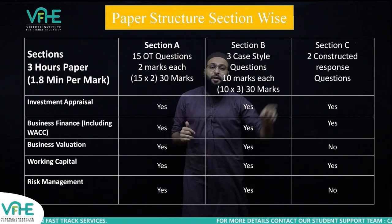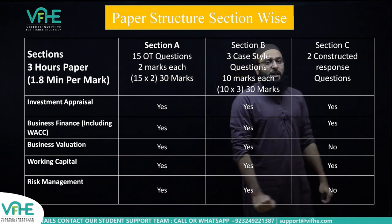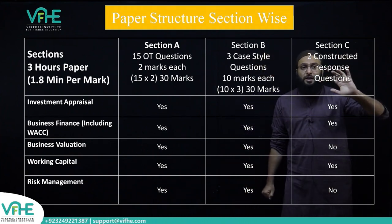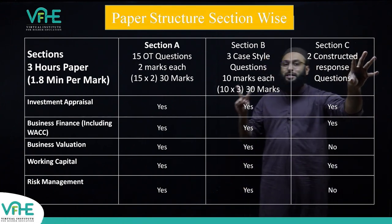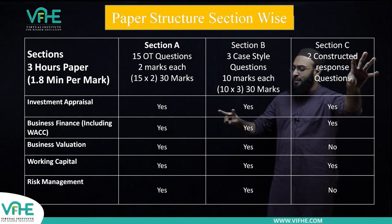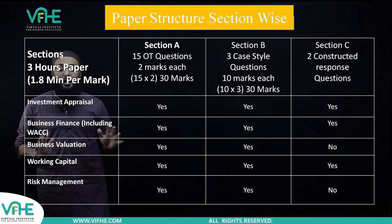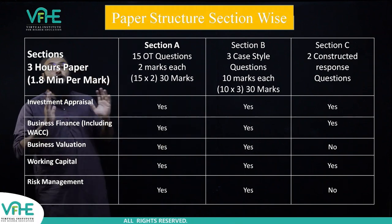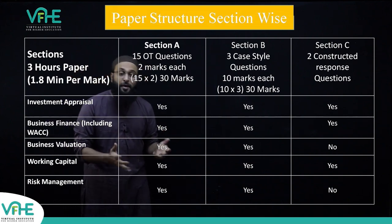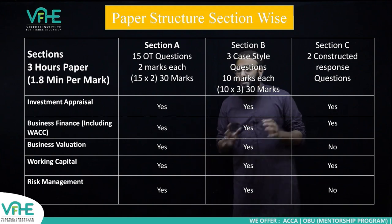Section C includes two constructive response questions worth 40 marks. For this area, you need two skills: spreadsheet skills and word processor skills, meaning your keyboard typing should be good. It's not typing on a cell phone — you need to be ready to use a keyboard for your examination.